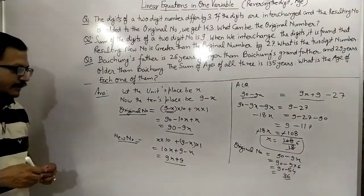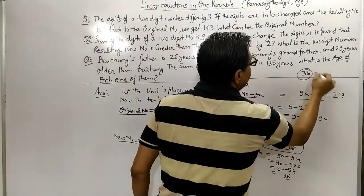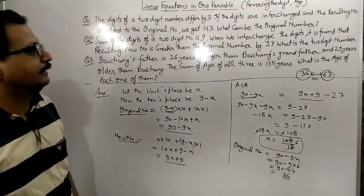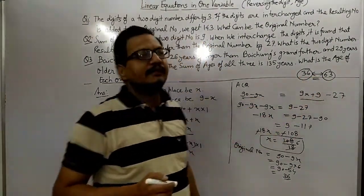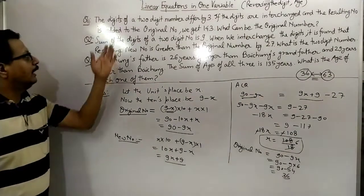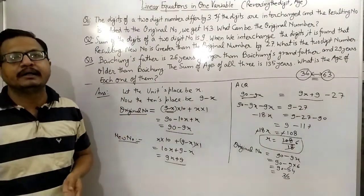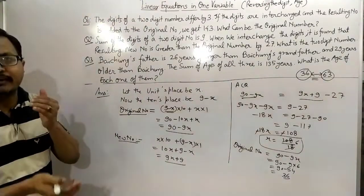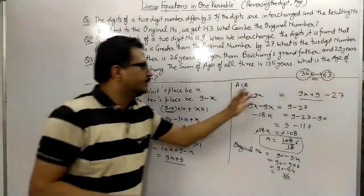So the original number is 36 and the new number after reversing the digits is 63. Let's verify: 63 − 36 = 27. Correct! The original number is 36 and the new number is 63.